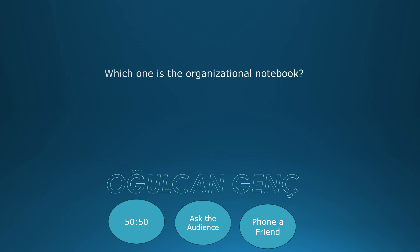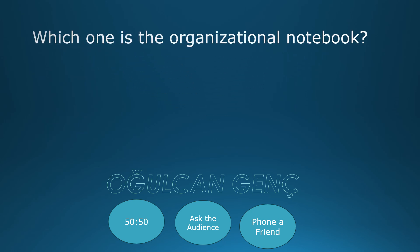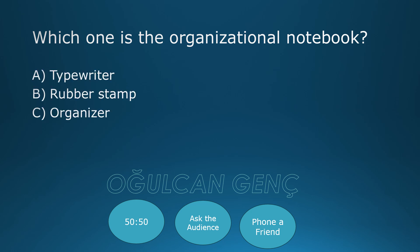Which one is the organizational notebook? Typewriter, Rubber Stamp, Organizer, Hole Punch. Correct answer: Organizer, C.